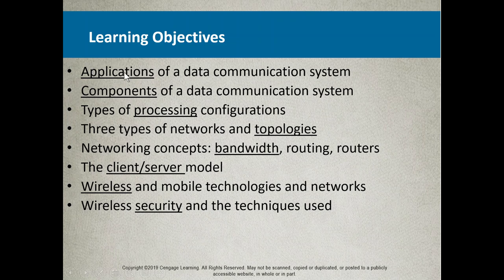We're going to talk about some of the applications of data communication systems and their components. We'll look at types of processing configuration, topologies, concepts like bandwidth, and clearly understanding the relationship between a client-server model, wireless, and wireless security. We've talked a bit about wireless security in the security chapter, but we'll discuss it more as it pertains to data communications.